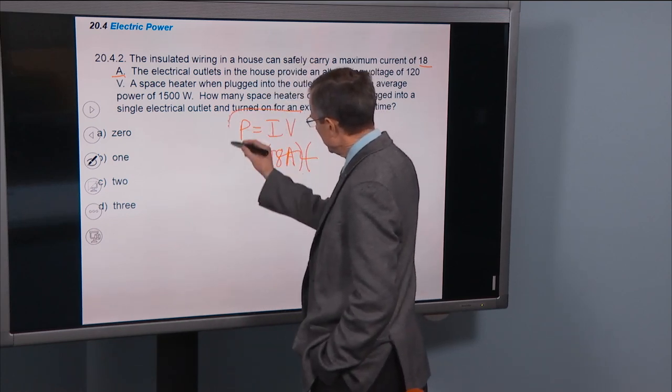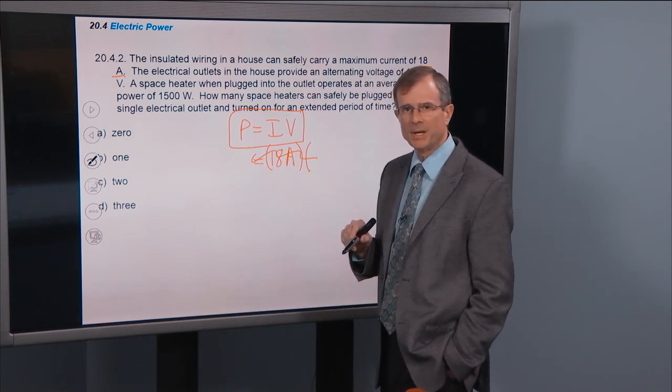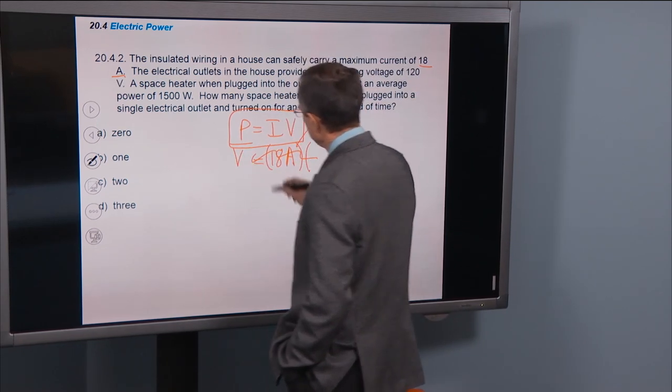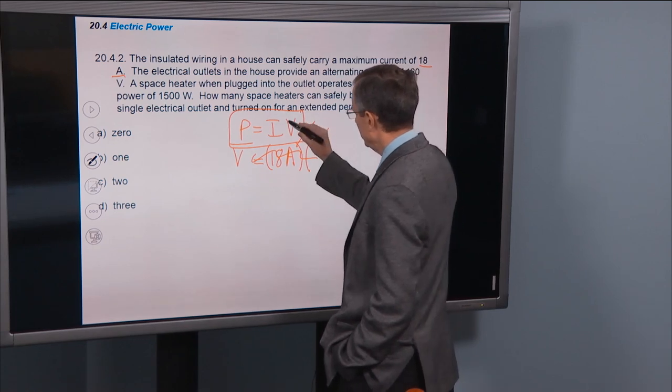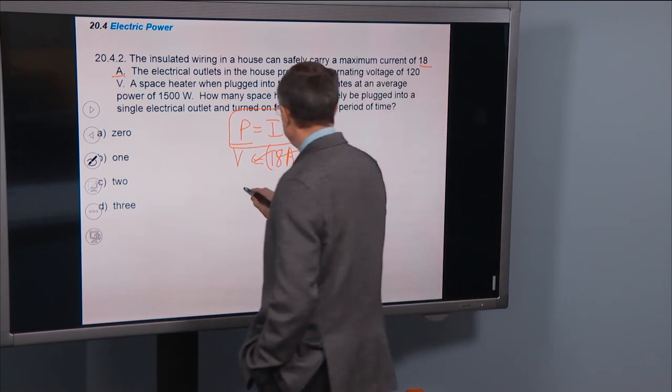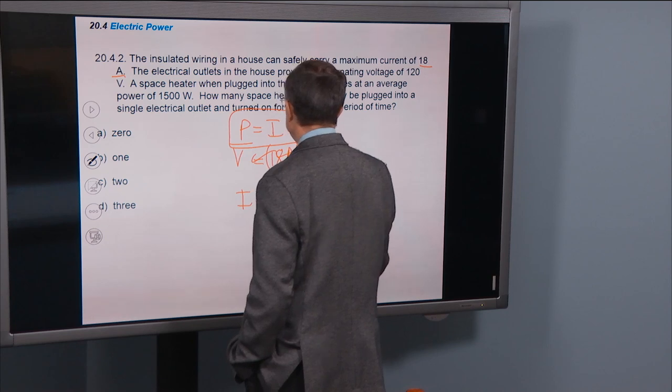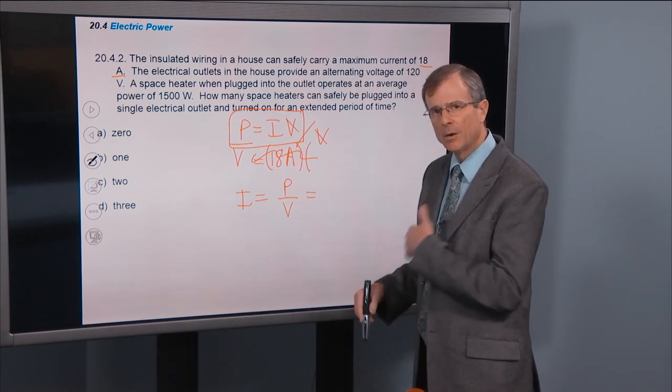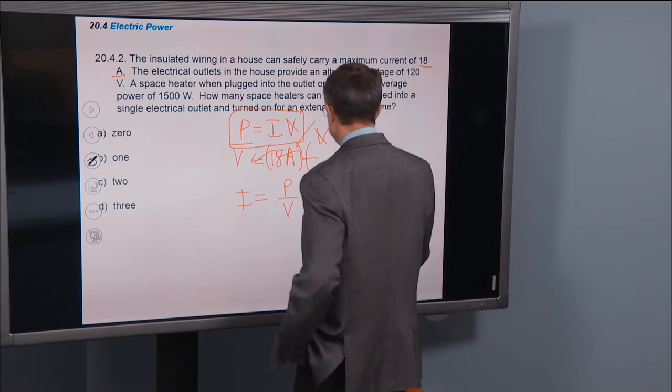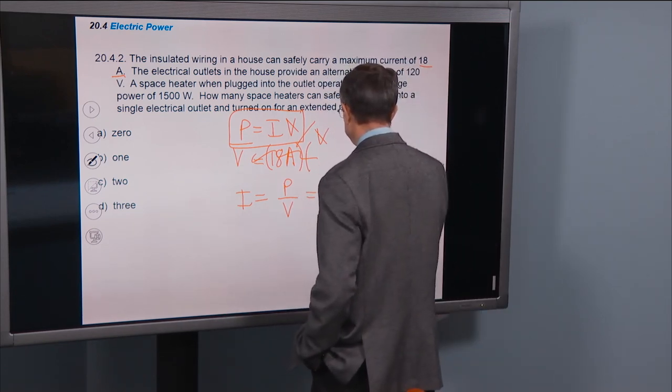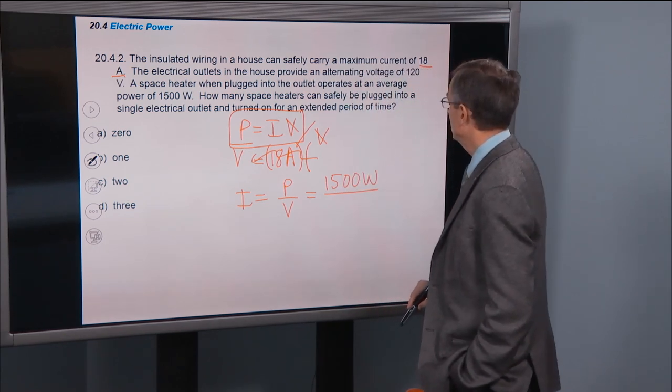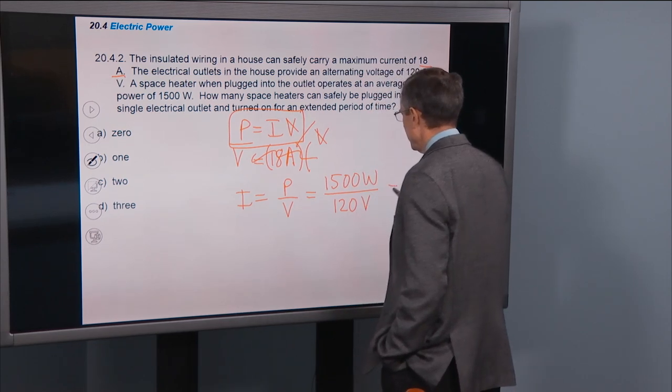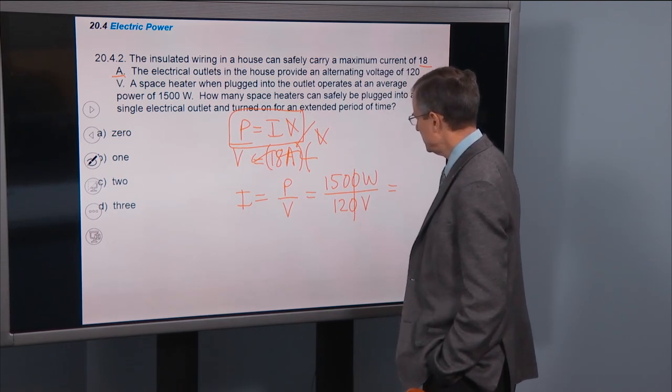So I'm going to start here. I'm going to divide both sides by V so I can solve for the current. The Vs on the right side cancel and we get that I is P over V. Okay, so now we're going to plug in the power of this heater, divided by the voltage of 120 volts. And here these zeroes cancel.